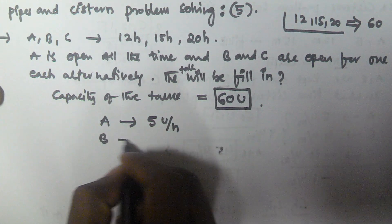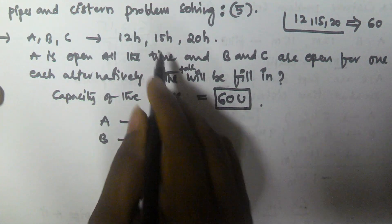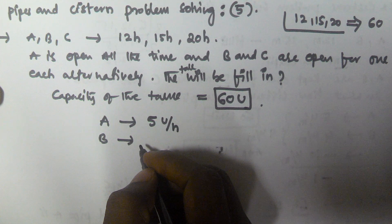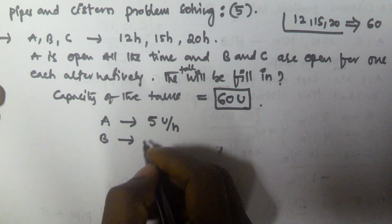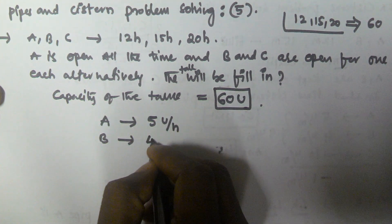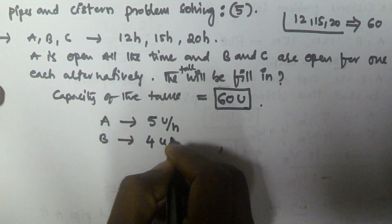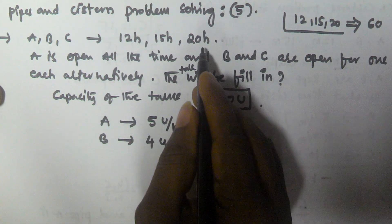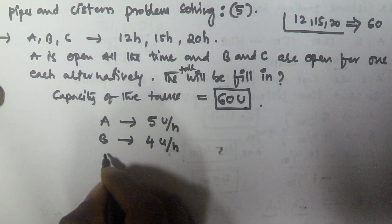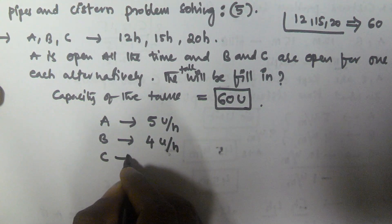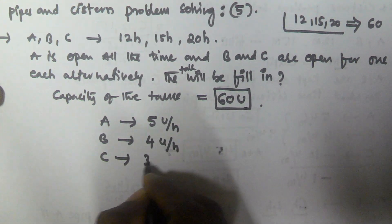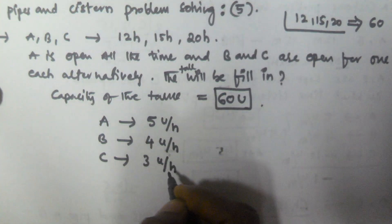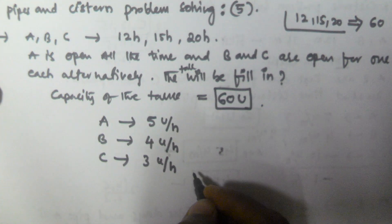B is filling in 15 hours, so that means it is filling at 4 units per hour. C is filling in 20 hours, that means C is filling at 3 units per hour.